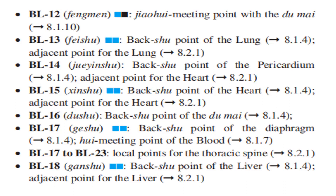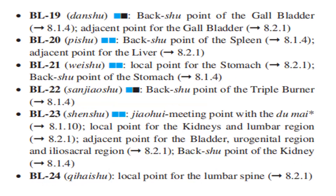Bladder 16 is the Back-Shu Point of the Du Mai. Bladder 17 is the Back-Shu Point of the Diaphragm and the Wei Meeting Point of the Blood. Bladder 17 to Bladder 23 are local points for the thoracic spine. Bladder 18 is the Back-Shu Point of the Liver and the adjacent point for the liver. Bladder 19 is the Back-Shu Point of the Gallbladder.